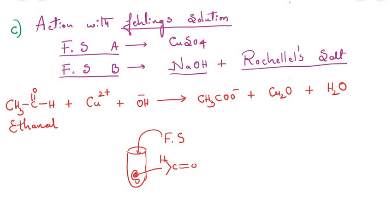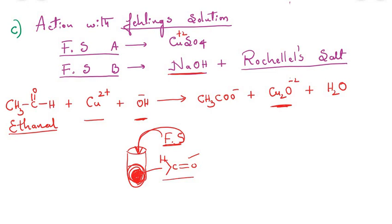Taking ethanol as an example: when it is treated with Fehling's solution A (copper sulfate, Cu²⁺) and B (basic medium, OH⁻), a red precipitate is formed. In the lab, when Fehling's solution is added to a test tube containing an aldehyde, the color of the solution changes to a red precipitate — the formation of red precipitate of cuprous oxide (Cu2O). Here copper goes from +2 to +1 (cuprous), indicating the aldehyde has undergone oxidation and Fehling's solution has been reduced to cuprous oxide.